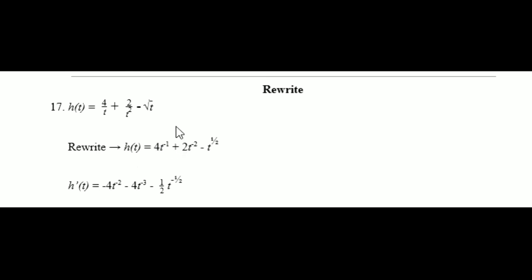For the square root, you rewrite it as t to the 1 half power, since taking a square root is the same as raising to the 1 half power. Now you can apply the power rule to each term. For the first term: move negative 1 to the front, multiply by 4, giving negative 4, and reduce the power: negative 1 minus 1 equals negative 2. For the second term: move negative 2 to the front, multiply by 2, giving negative 4, and reduce: negative 2 minus 1 equals negative 3. For the square root term: move 1 half to the front, multiply by the implied negative 1, giving negative 1 half, and reduce: 1 half minus 1 equals negative 1 half.